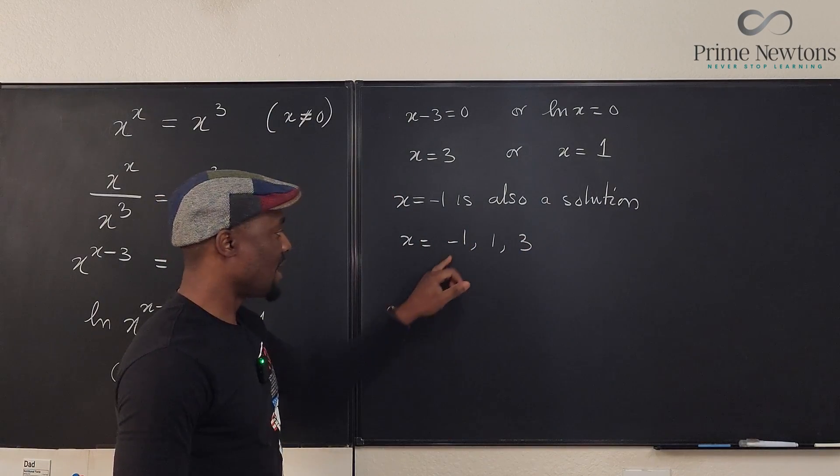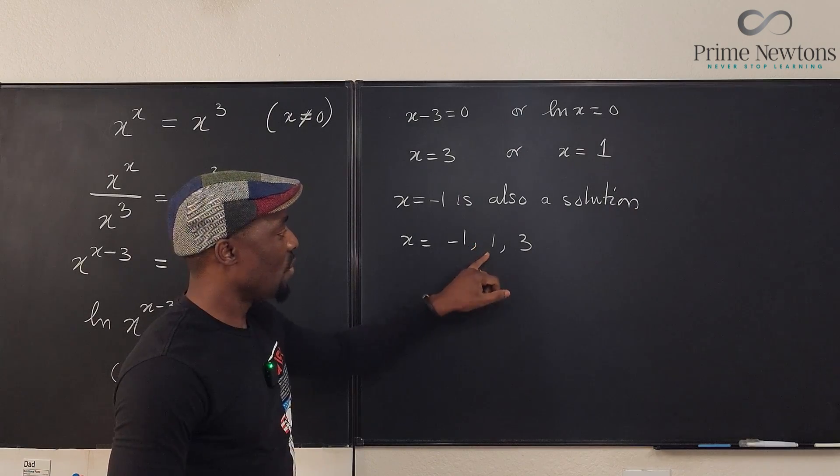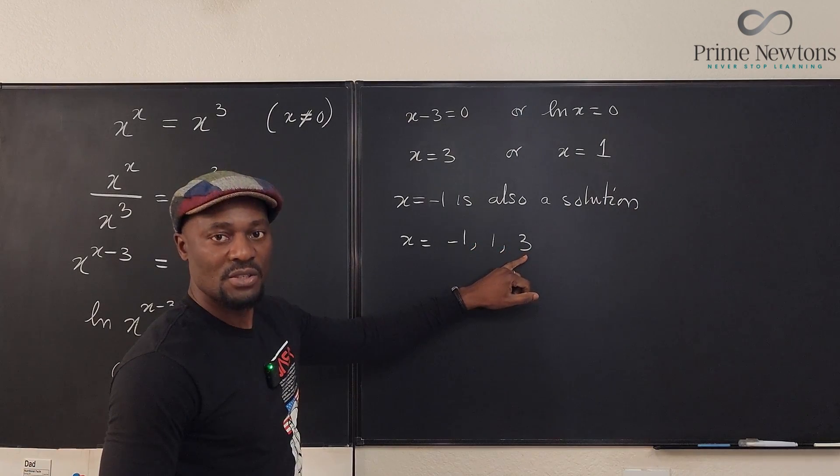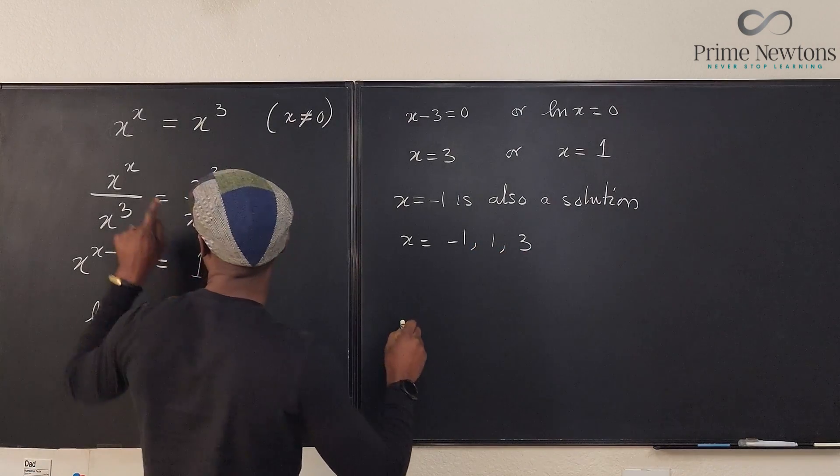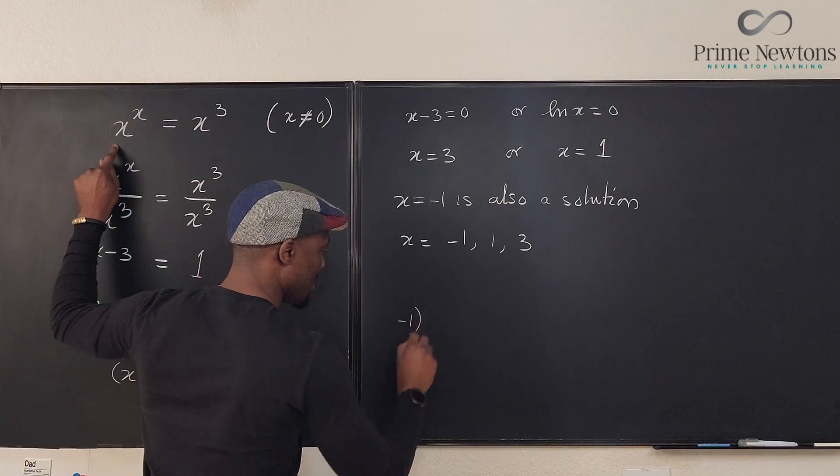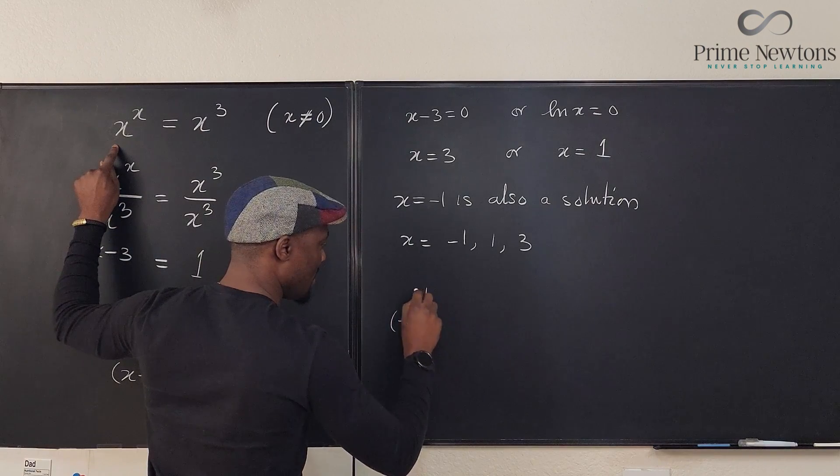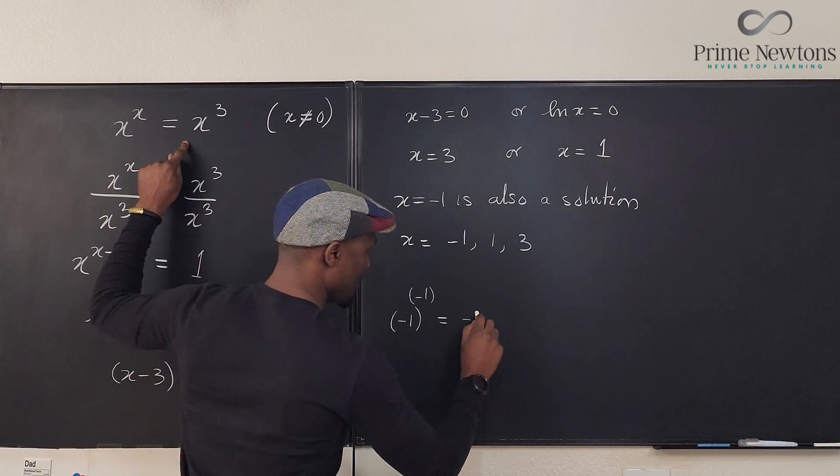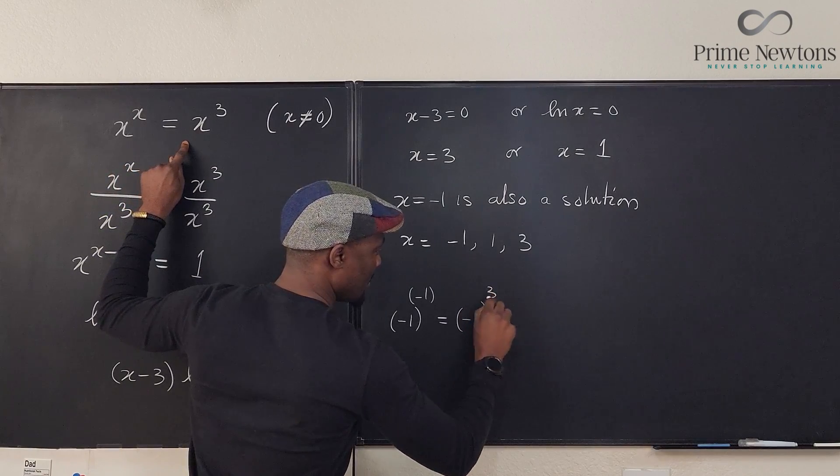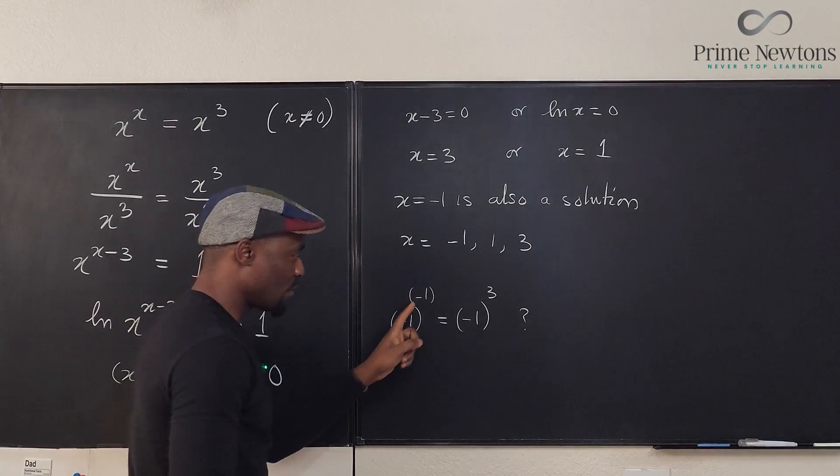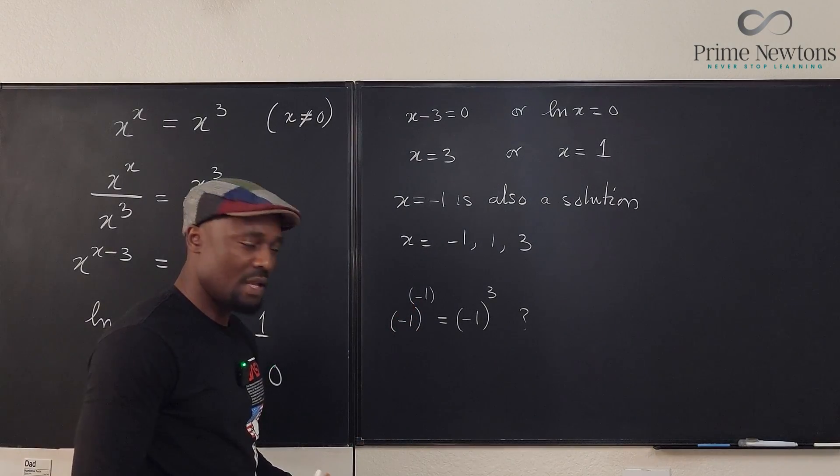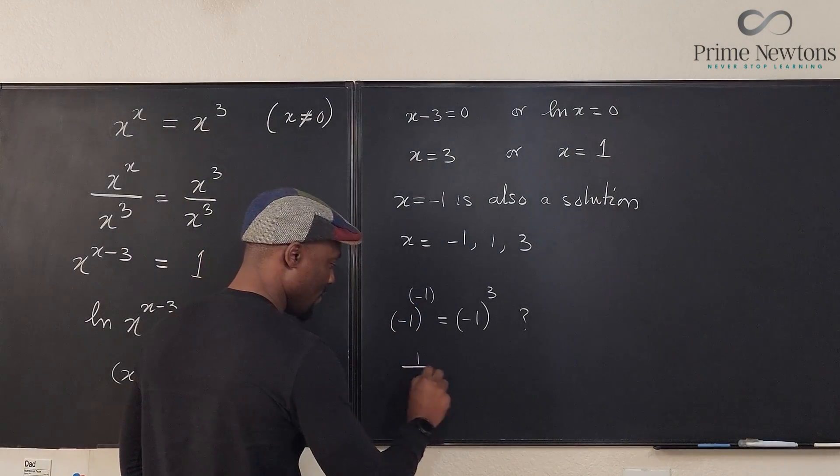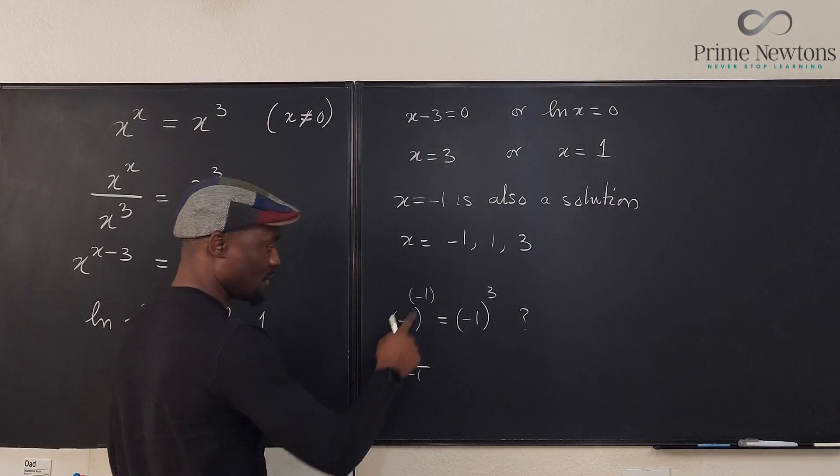Okay, x is either minus 1 or 1 or 3. I just listed them out. Now let's test minus 1. Minus 1 raised to power minus 1, is it the same thing as minus 1 to the third? What is minus 1 raised to power minus 1? It is the same thing as 1 over minus 1.